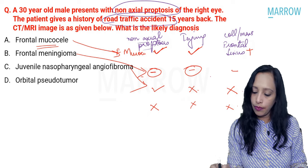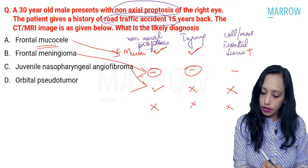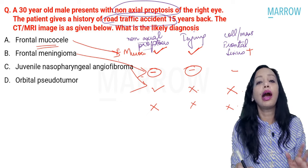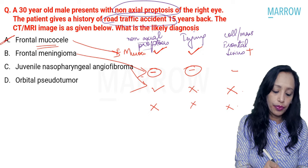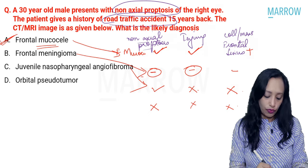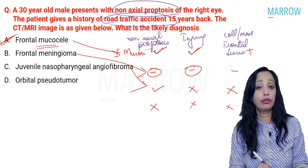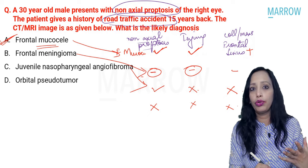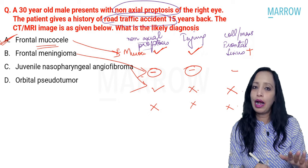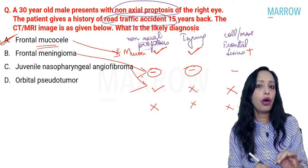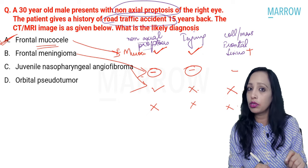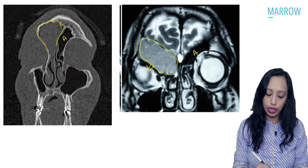The answer is frontal mucocele. Whenever you feel that you are not getting the answer from the CT or MRI image, don't panic — be calm with what you are sure of and try to approach the question using those details. You will be able to arrive at the answer.